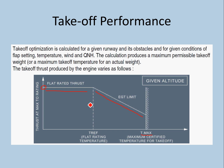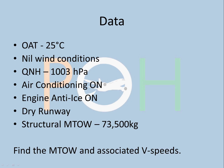The chart I have taken is for Chennai, so the TREF there is 44. Below 44 degrees, if you require maximum takeoff rating, the engine will produce maximum flat rated thrust. But beyond 44 degrees, the thrust will start to drop. TMAX is your maximum certified temperature for takeoff. Now we can actually step into the question itself.